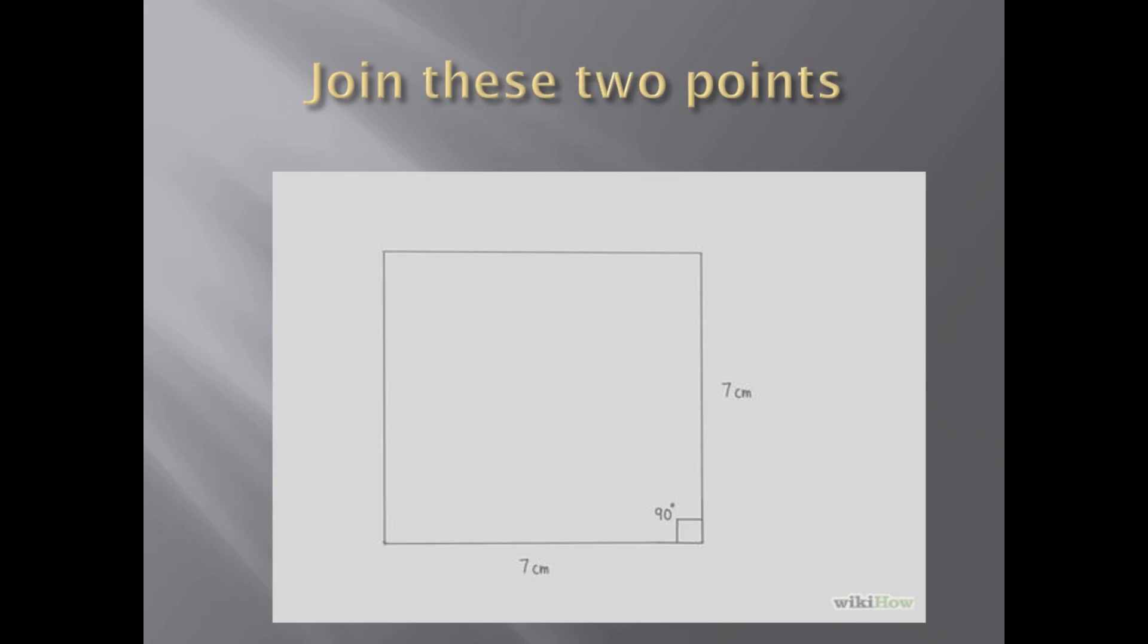Join these two points. When you join the two points, this is the perfect shape of a square, you see, with angle 90 degrees and the sides measured having the same length on each side.